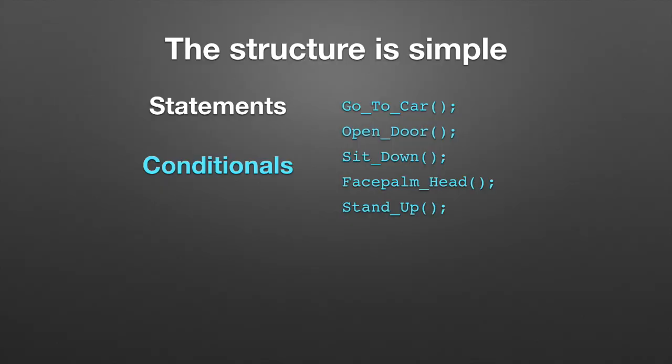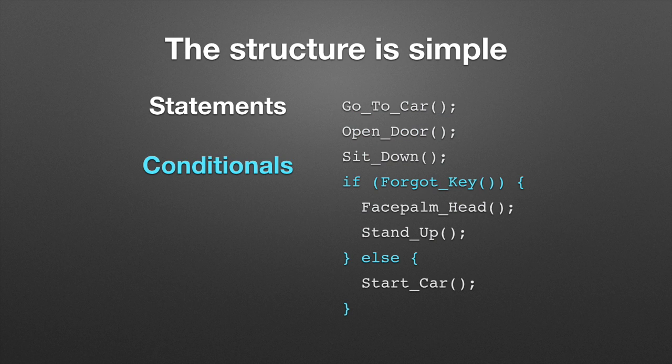Conditionals are the next type. This is where you'll do one thing or another thing. So you might say, well, if I forgot my key, then I'll hit myself in the head and I'll stand up. Otherwise, I'll start the car. That's building block number two.